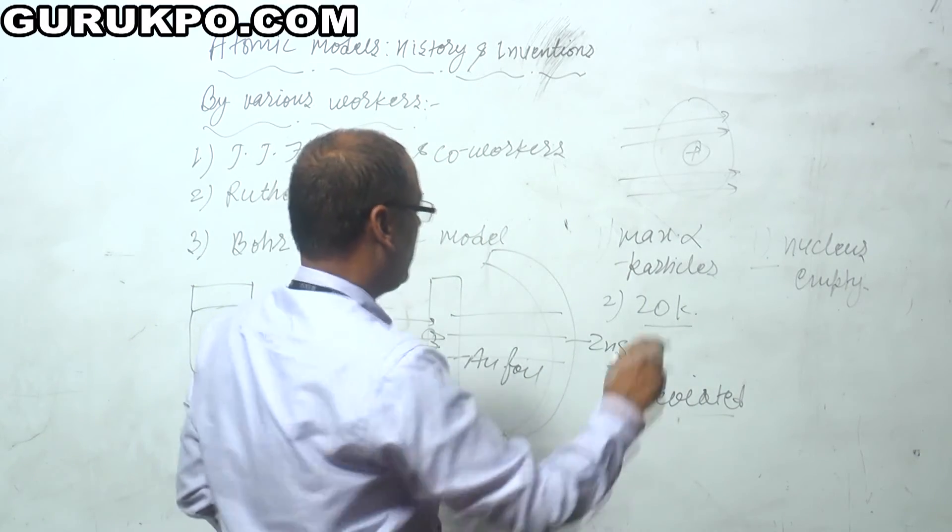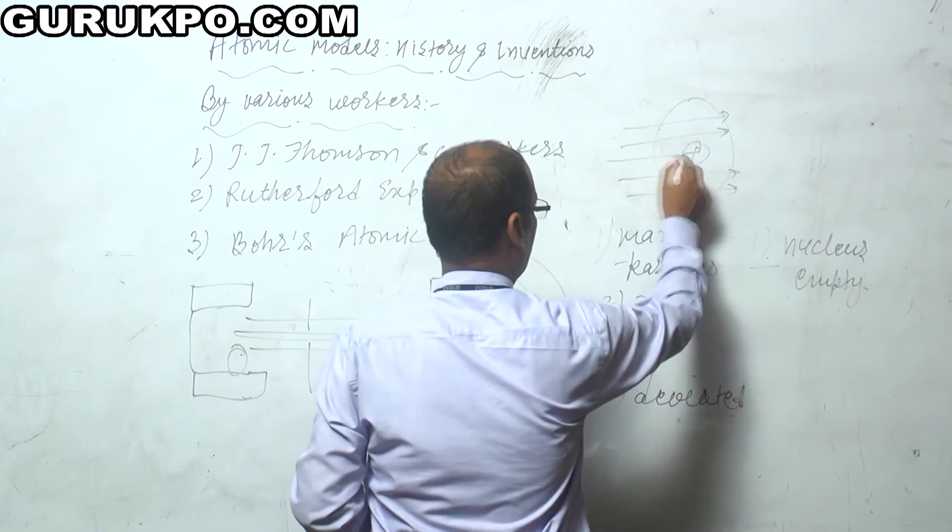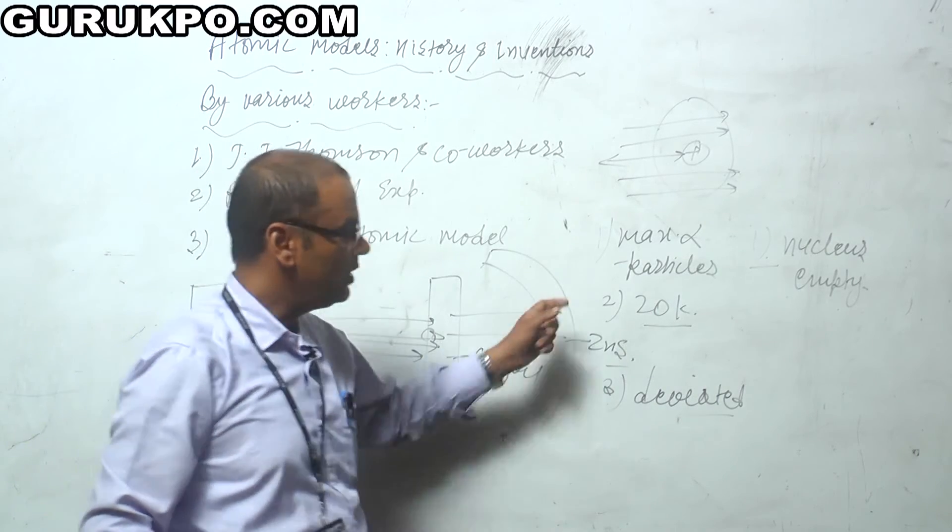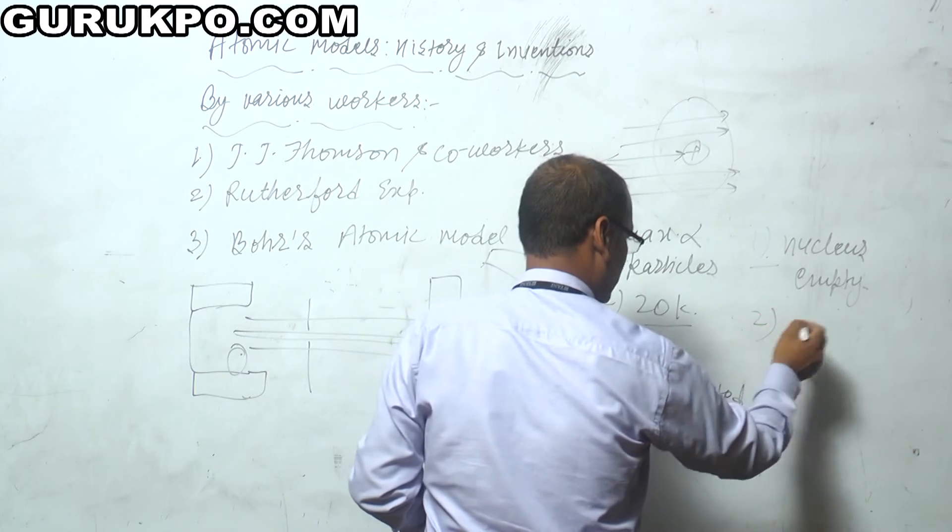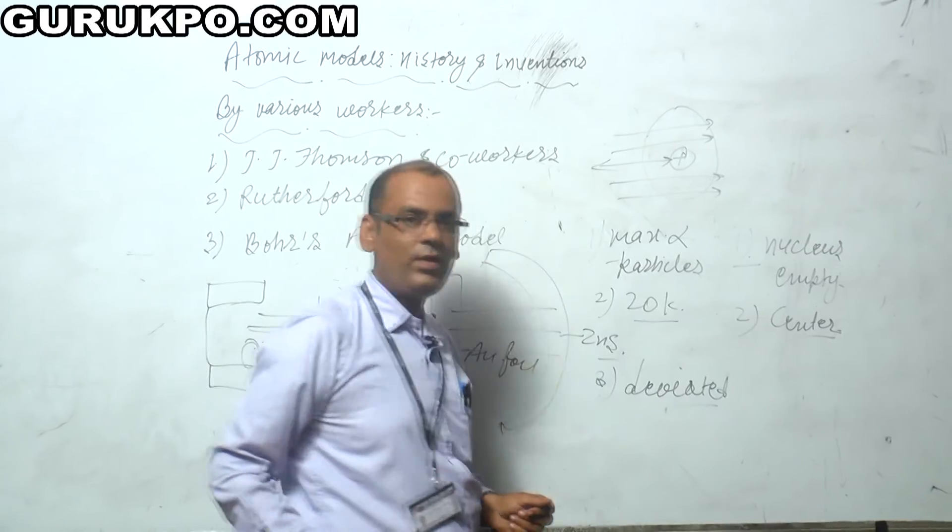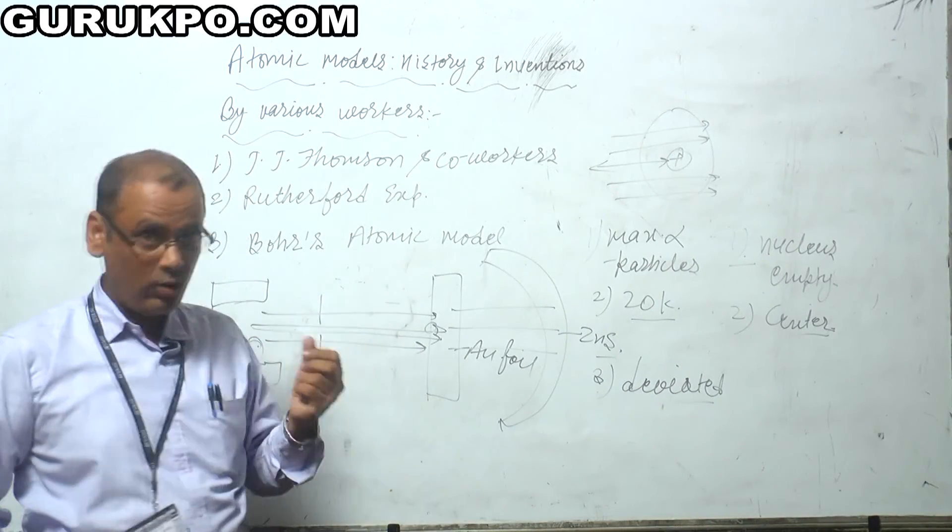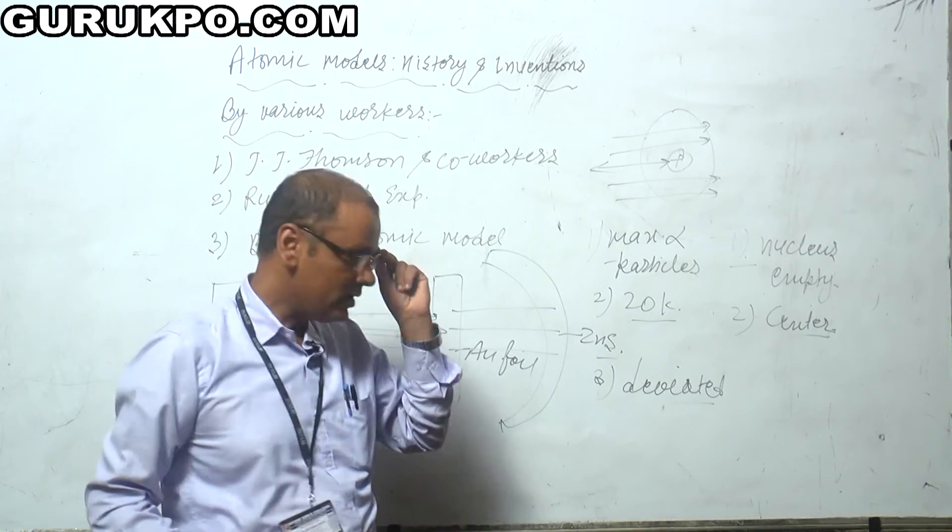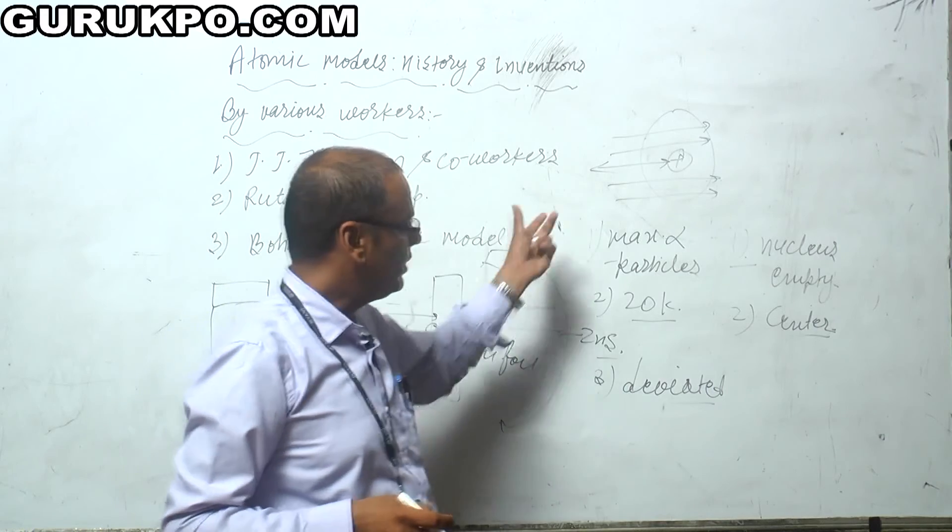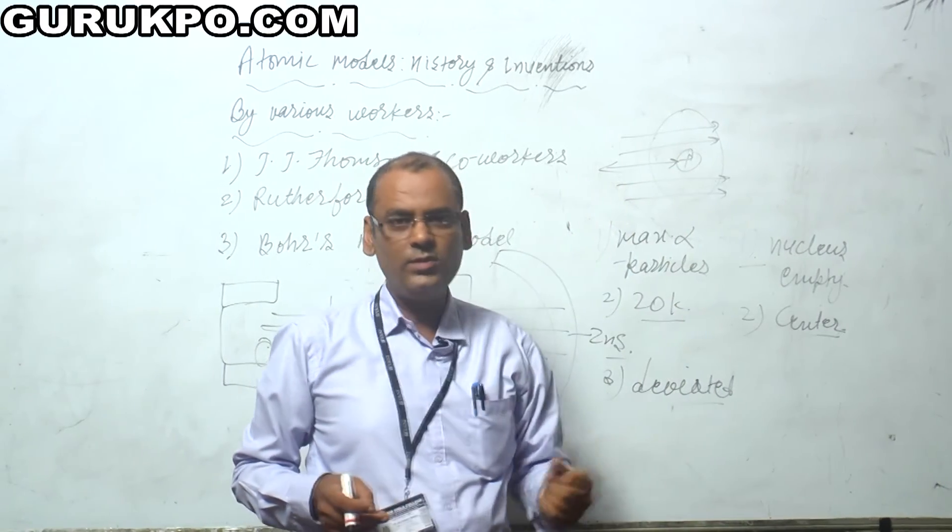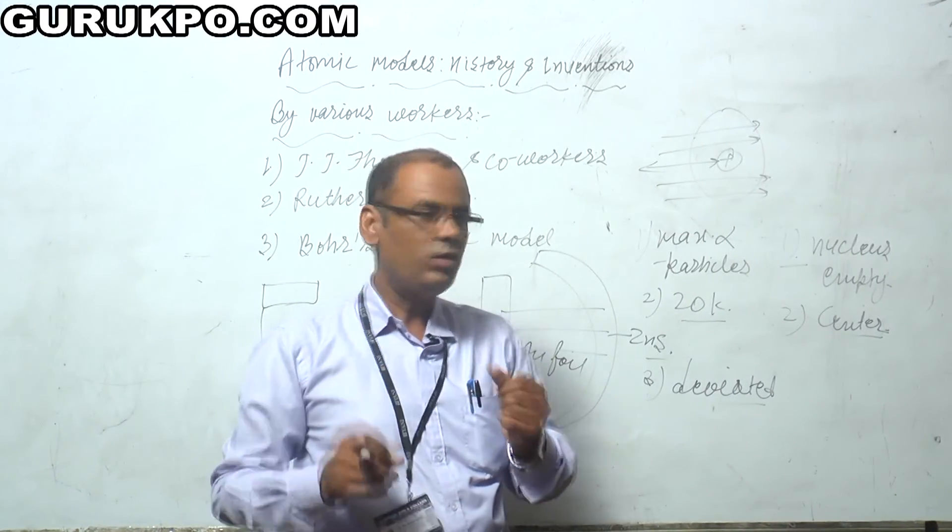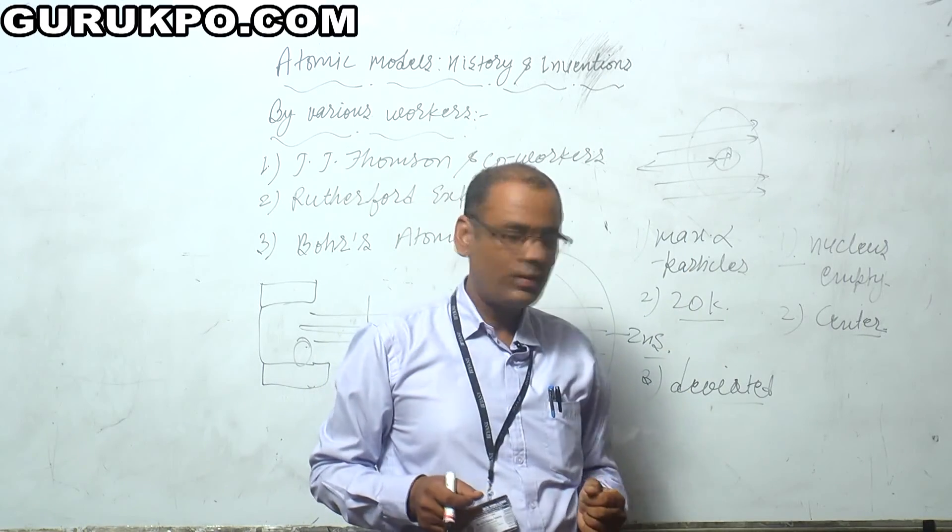But out of twenty thousand, one alpha particle was rebounded again to the source and he concluded that some mass must be there in the center of atom where the alpha particle was rebounded. That's why he made an assumption that most of the part of the atom and the nucleons—at that time the nucleon term was not used—he has given that most of the nucleus was concentrated at the central part.